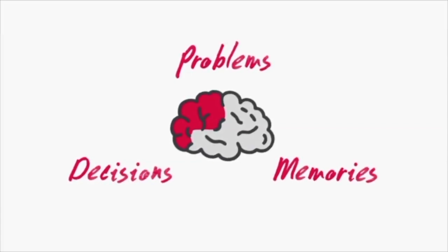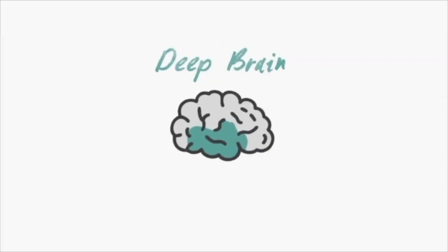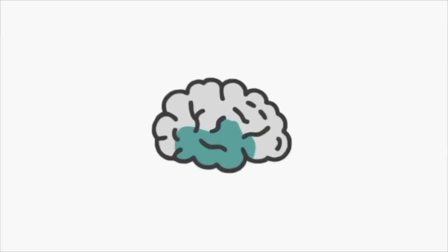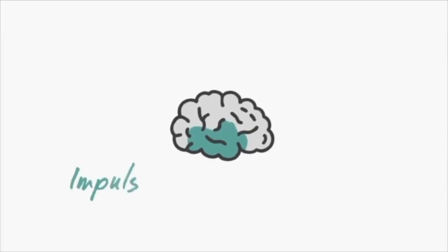Whereas the limbic system part or deep brain generates emotions and is sensitive to new experiences, new things and new people. It is impulsive, likes immediate gratification and doesn't look ahead.